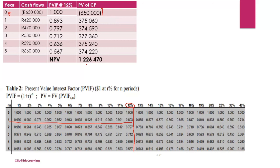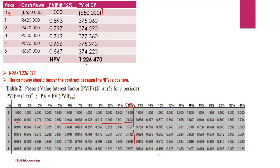The NPV is clearly positive. In our conclusion, we say the NPV is positive, therefore the company should tender for the contract. That is how you calculate NPV using a table when cash flows are non-constant.